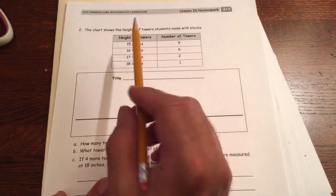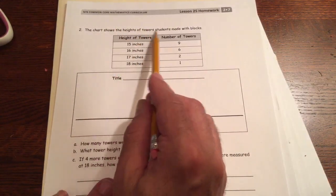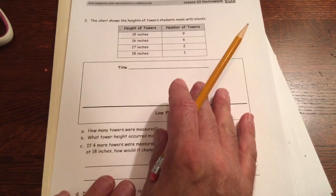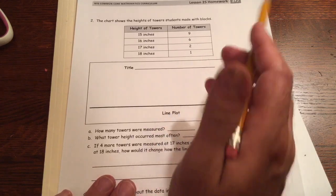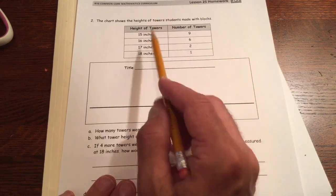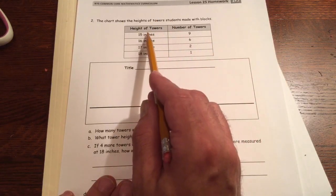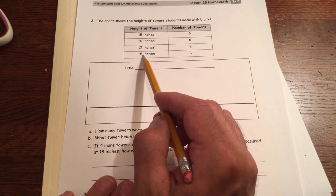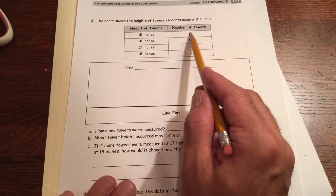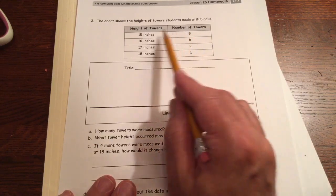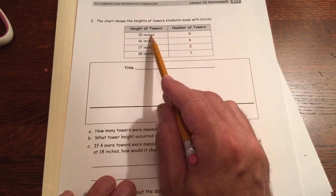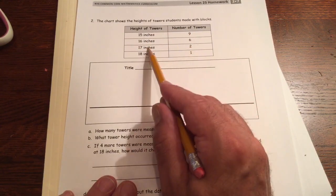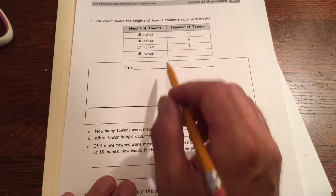And now we see another chart that shows the heights of towers students made with blocks. So we got some kids who are making towers out of blocks. And we have towers of four different heights: 15, 16, 17, and 18 inches tall. Nine towers were 15 inches tall, six towers were 16 inches tall, two towers 17 and 1 at 18.